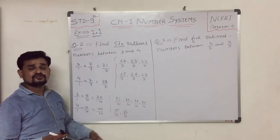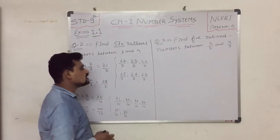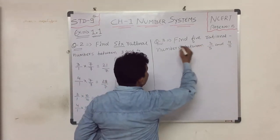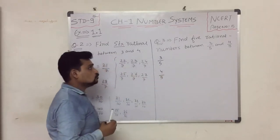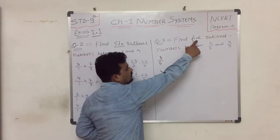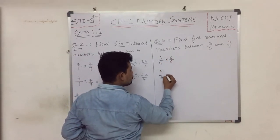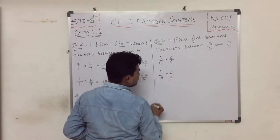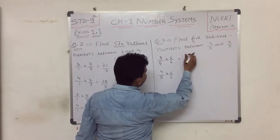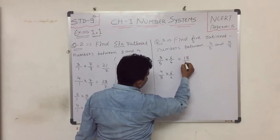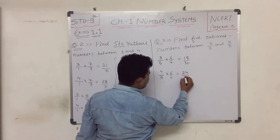Since there are infinite rational numbers between any two numbers, this answer works. Question 3 asks us to find 5 rational numbers between 3/5 and 4/5. To solve this, we multiply both numerator and denominator by 6. So 3/5 becomes 18/30 and 4/5 becomes 24/30.